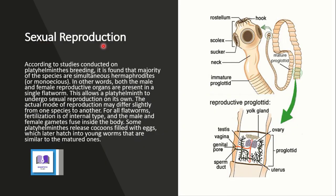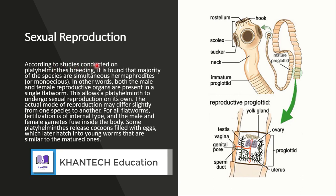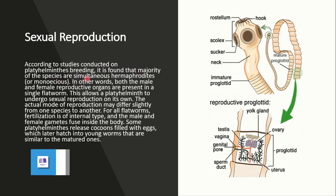Now for sexual reproduction — according to studies conducted on platyhelminthes breeding, it is found that the majority of species are simultaneous hermaphrodites, or monoecious. This means that both male and female reproductive organs are present in a single flatworm, which is why they are called hermaphrodites or monoecious.